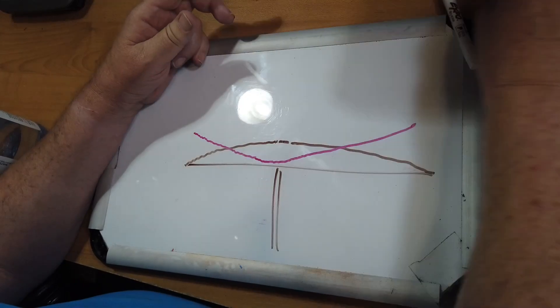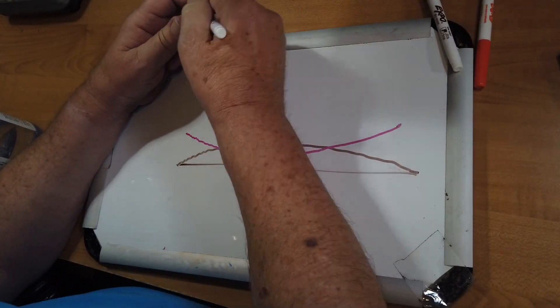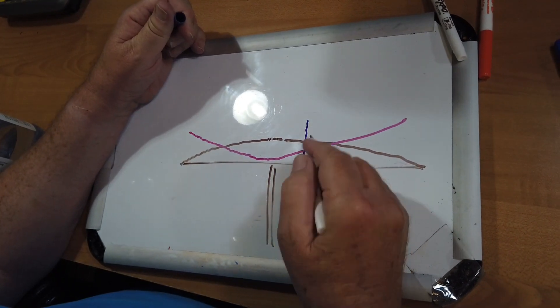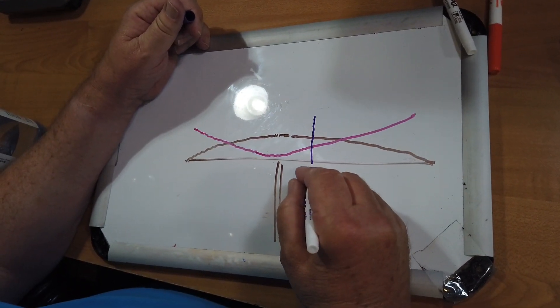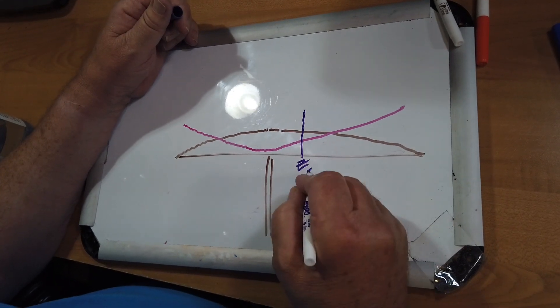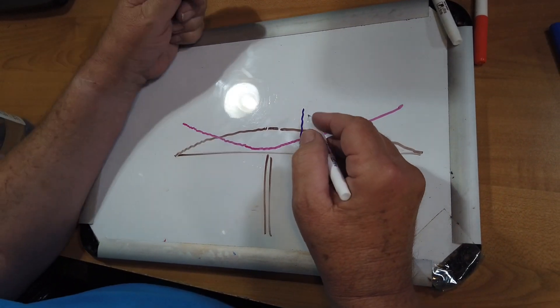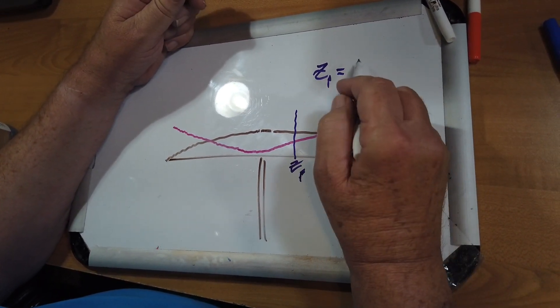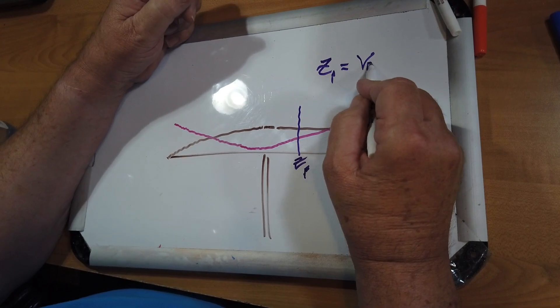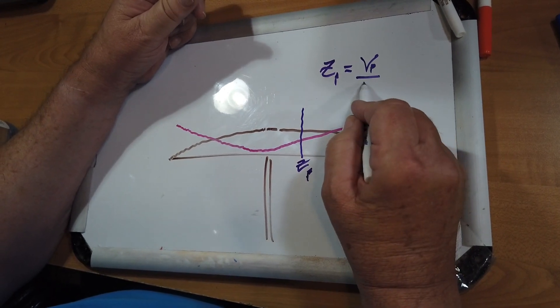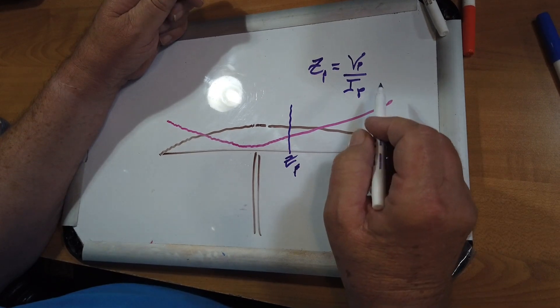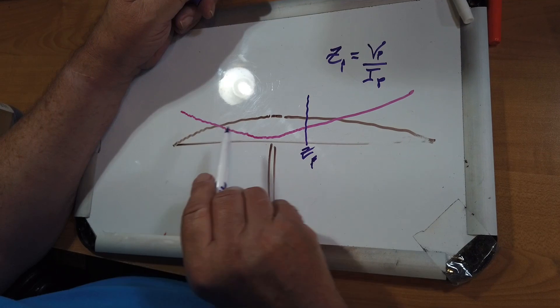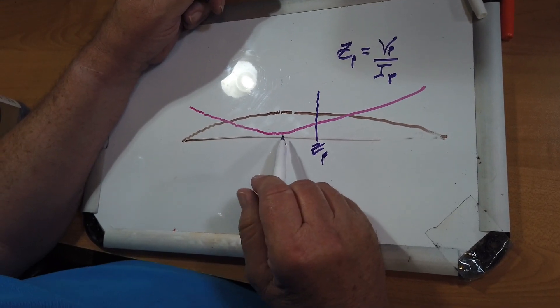Now, the impedance at any given point, and it's obviously not to scale, but the impedance at any given point, we'll call Z sub P for point, is the voltage at the point divided by the current at the point. So as you move along this curve, clearly at the center, the impedance is lowest.